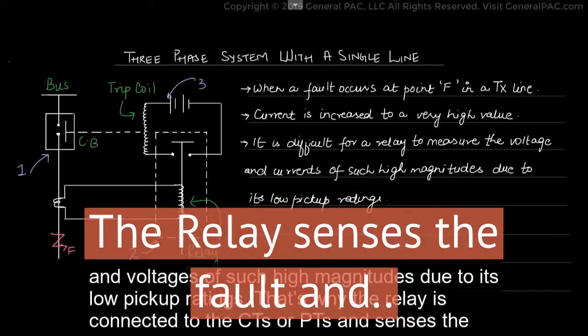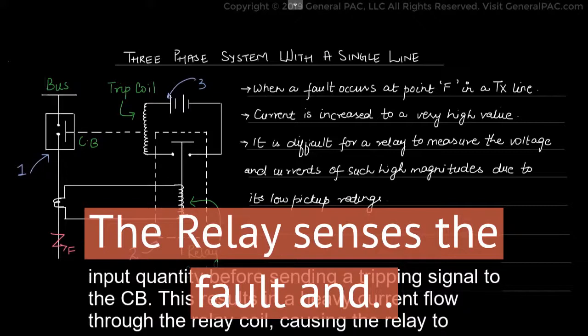The relay senses the input quantity before sending a tripping signal to the circuit breaker. This results in a heavy current flow through the relay coil, causing the relay to operate.